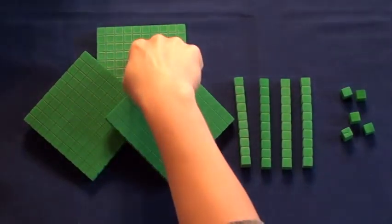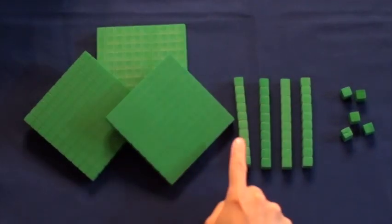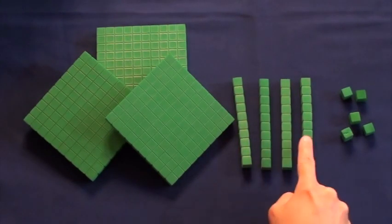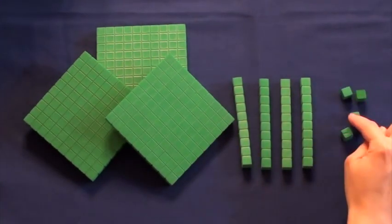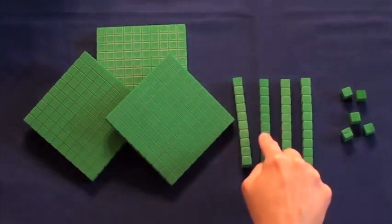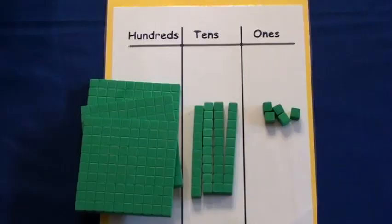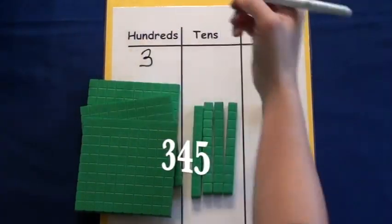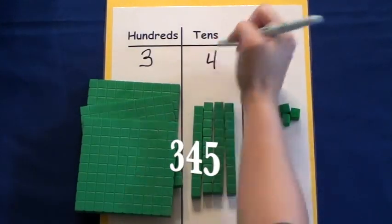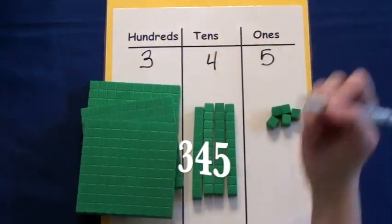One hundred, two hundred, three hundred. Ten, twenty, thirty, forty. One, two, three, four, five. Three hundred forty-five. Three hundred forty-five.